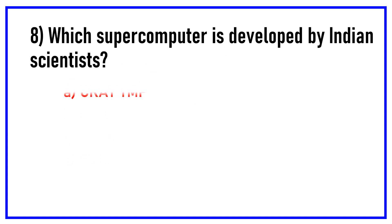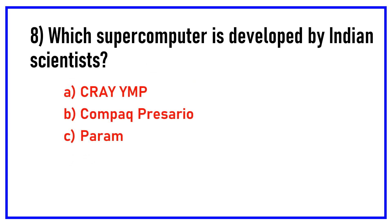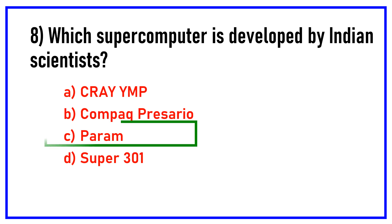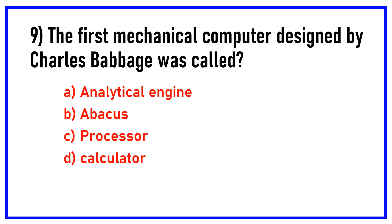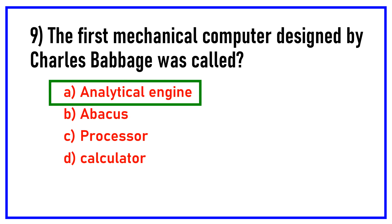Which supercomputer is developed by Indian scientists? Answer: PARAM. The first mechanical computer designed by Charles Babbage was called. Options are: analytical engine, abacus, processor, calculator. Answer: Analytical engine.